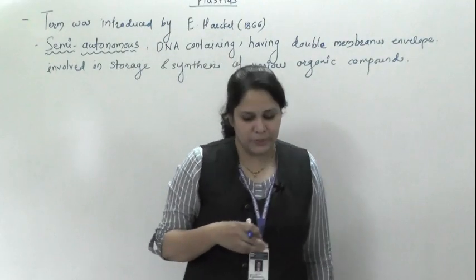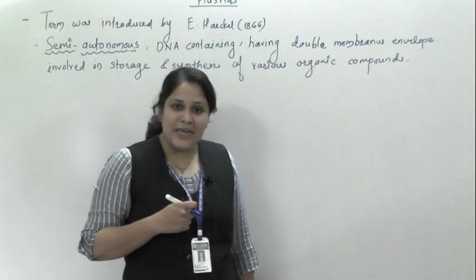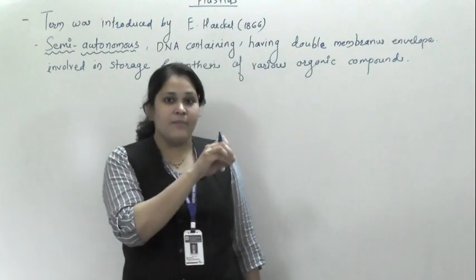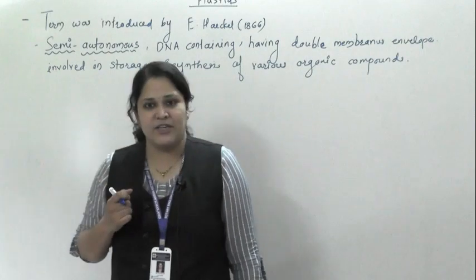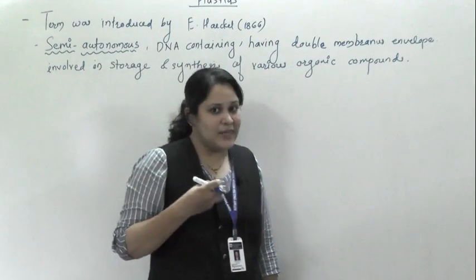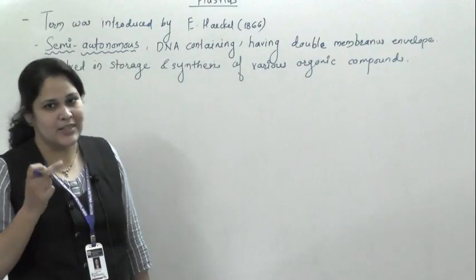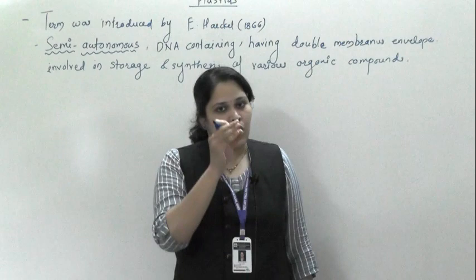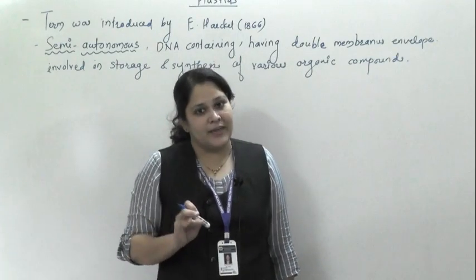Now I will explain why they are called semi-autonomous. Autonomous means those who are able to regulate all their functions or activities. In a cell there is a nucleus which acts as the headquarter — the brain of the cell — because it consists of nucleic acid, specifically DNA, which regulates all activities of the cell. Besides the nucleus in a eukaryotic cell, there are two more structures that contain their own DNA: plastids and mitochondria. They contain circular DNA. In eukaryotic cells, nuclear DNA is linear, but the DNA of plastids is circular.